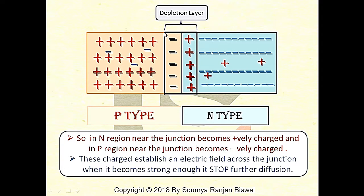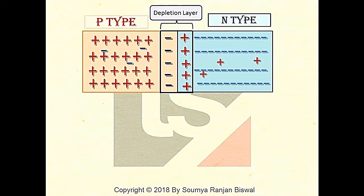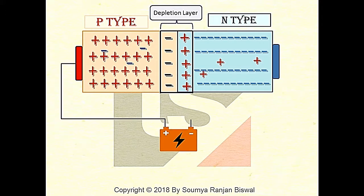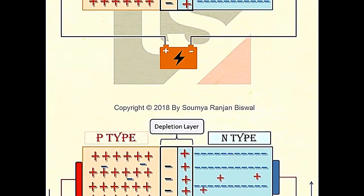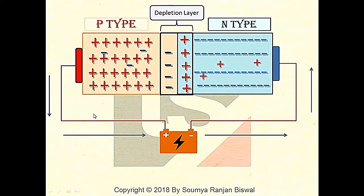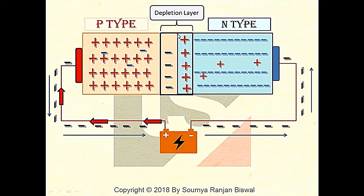This region is called the depletion layer. Now, for forward biasing, take a battery or DC source and connect the positive terminal to the P-type semiconductor and the negative terminal to the N-type semiconductor. The positive terminal of the battery attracts electrons from the P-material, leaving a hole there, and electrons travel to the N-region and get neutralized, so the depletion region gets reduced. Due to the reduction of the depletion layer, a current flows. This is called forward biasing.